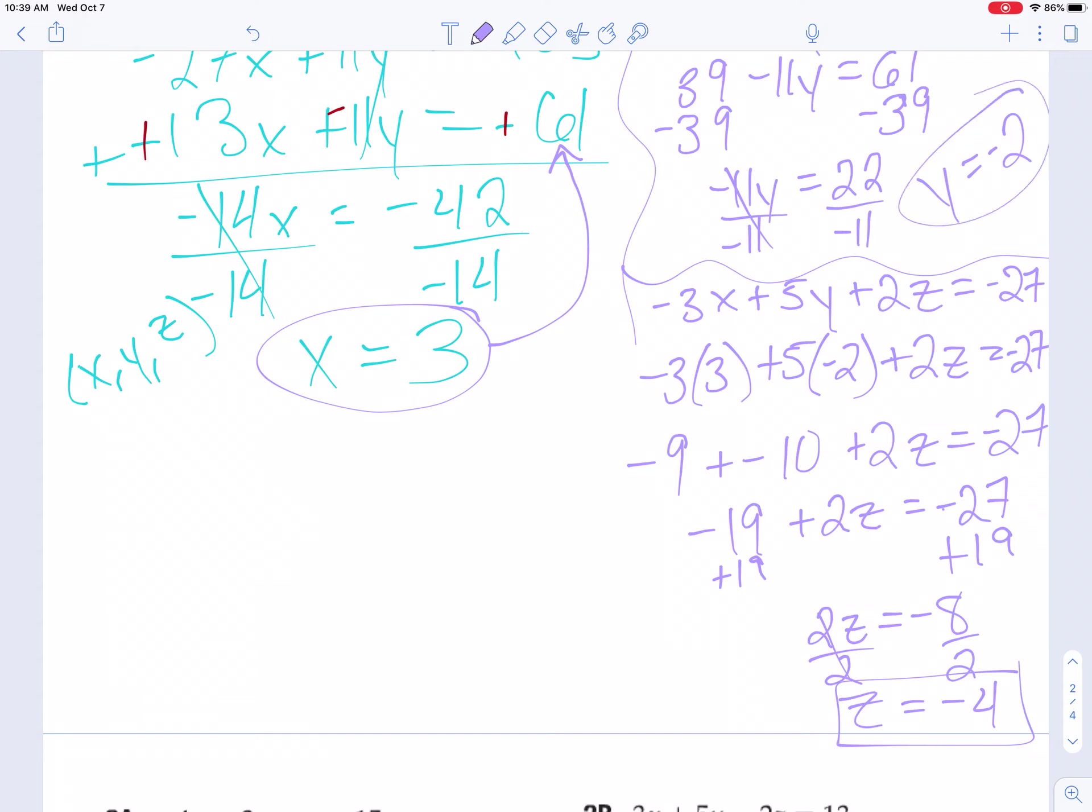Okay, but that's not good enough. We know that our final answer needs to be written like a point, just like all of the sections we've done so far. So if my point has to be x, y, z, alphabetical order, whatever they give you, x is 3, y is negative 2, and z is negative 4. And that is my final, final answer.